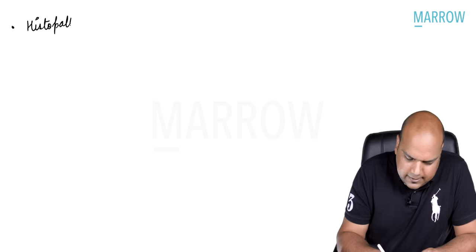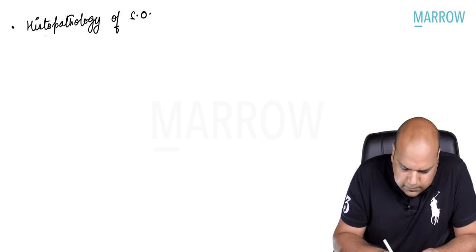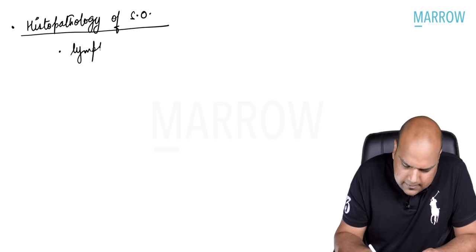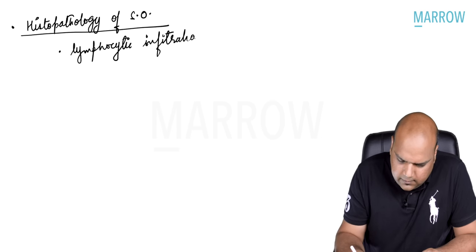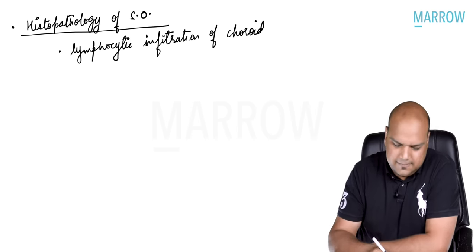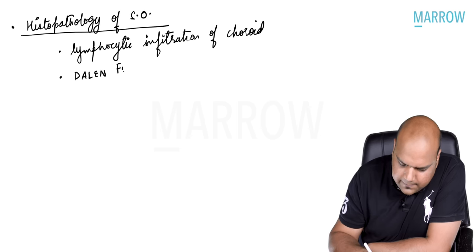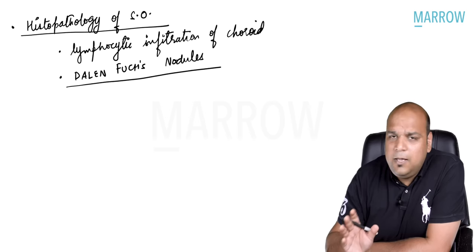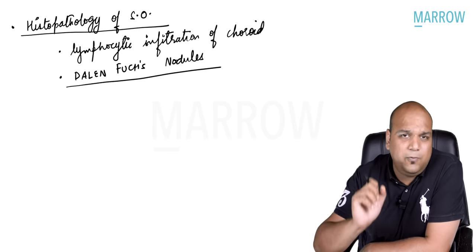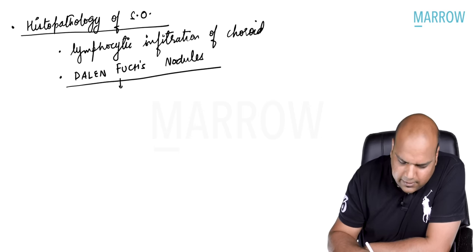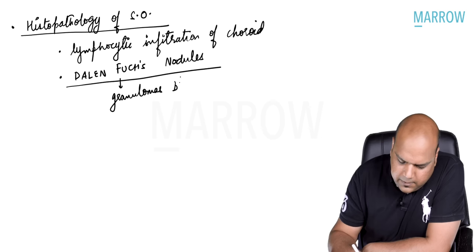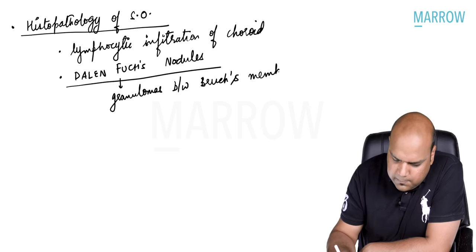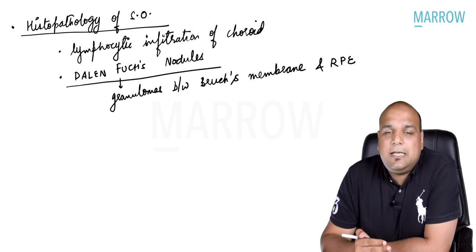The histopathology of sympathetic ophthalmitis shows lymphocytic infiltration of the choroid. We also see Dalen-Fuchs nodules — but please remember these are not pathognomonic for sympathetic ophthalmitis; they are also seen in VKH syndrome. Dalen-Fuchs nodules are granulomas formed between Bruch's membrane (the innermost layer of choroid) and the retinal pigment epithelium (the outermost layer of the retina).